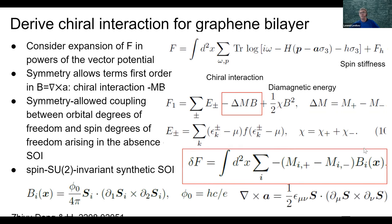This is the final answer for the chiral interaction. Let me emphasize what's interesting: this is an interaction between an orbital degree of freedom — orbital magnetization in a band with Berry curvature — and spin degrees of freedom encoded in the chirality density. It arises without spin-orbit interaction.